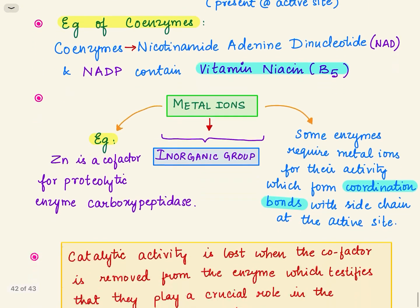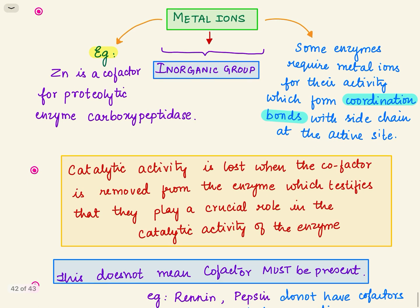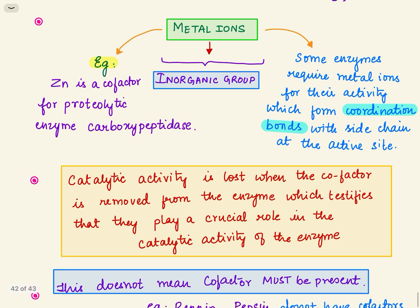The last cofactor is metal ions which is an inorganic group. Some enzymes require metal ions for their activity which form coordination bonds with the side chain of the active site. The example is zinc, which is a cofactor for proteolytic enzymes present in the human body like carboxypeptidase.